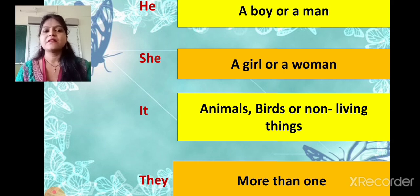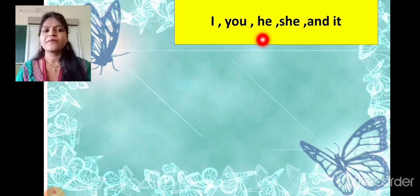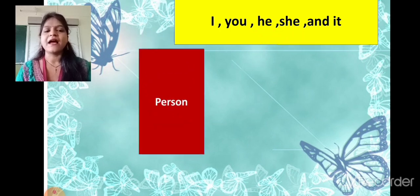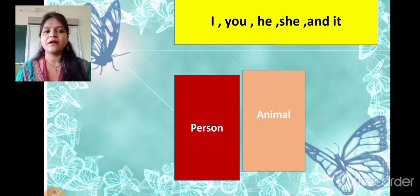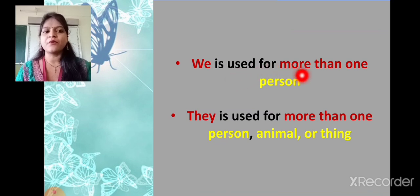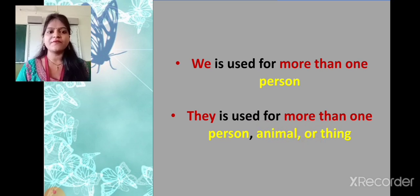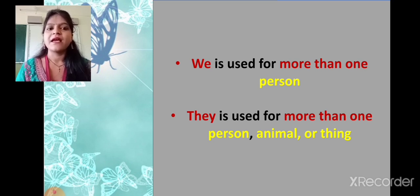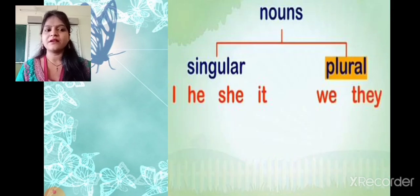I, you, he, she and it are used for a person, animal or thing. We is used for more than one person. They is used for more than one person, animal or thing. So students, we is used only for persons in plural. And they is used for persons, animals or things. Regarding singular and plural: I, he, she and it are singular. We and they are plural.